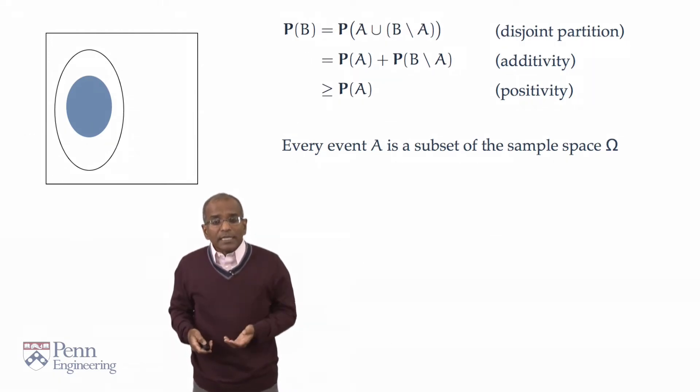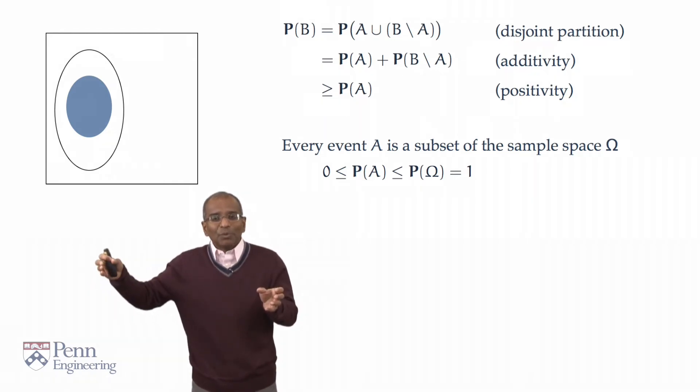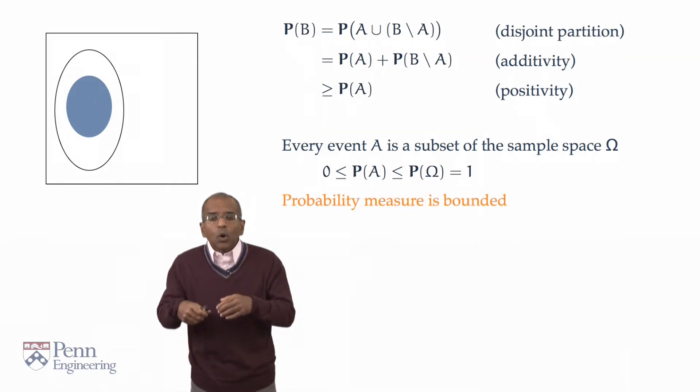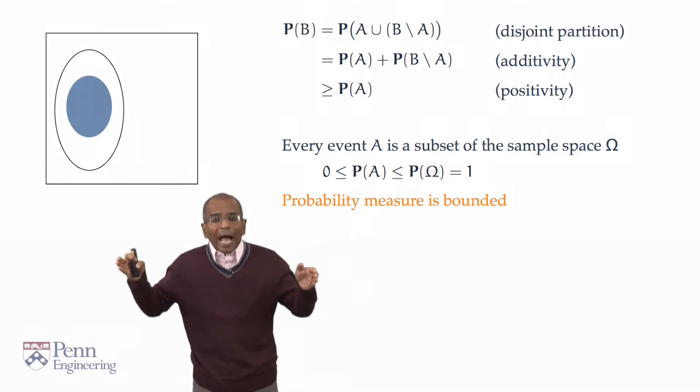By monotonicity, then, the probability of any event A cannot exceed the probability of omega. But all probabilities are non-negative. So in the bookend, we have an inequality 0. And the probability of omega by normalization is 1. And therefore, we conclude without further ado that all probabilities are bounded between 0 and 1.